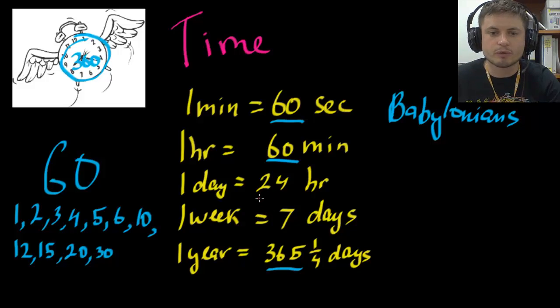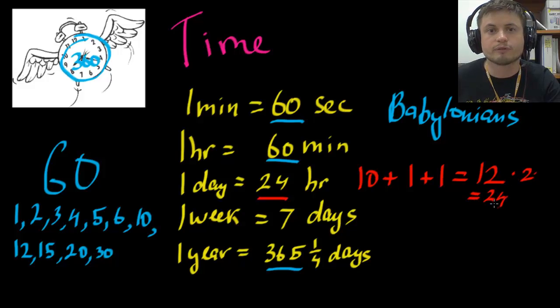Then we have 24 hours in a day. Now where is that from? Well that's actually from ancient Egyptians who measured their days in basically two units, day and night. And then each day had 10 hours. But then there was also one hour of twilight in the beginning and another hour of twilight at the end. And that basically made it 12 hours, times 2 is 24. So that's where we get 24 hours from.